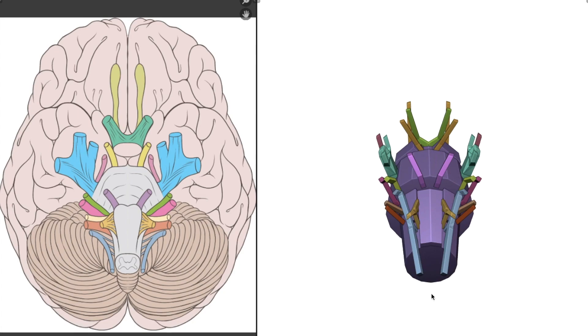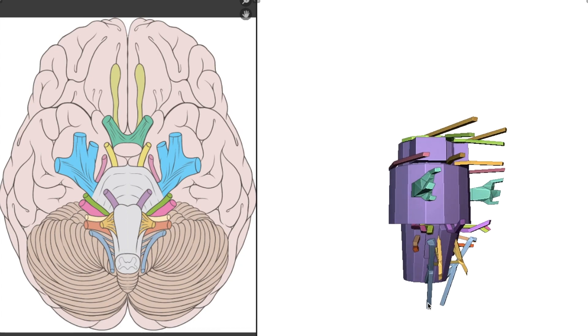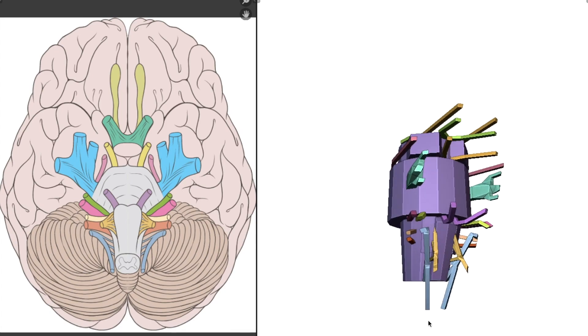When it comes to the cranial nerves, there are two images that most students of anatomy will be familiar with. There's this one, which shows the locations of the nerves relative to the brain and the brain stem.